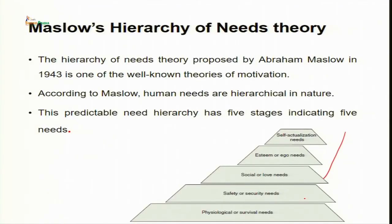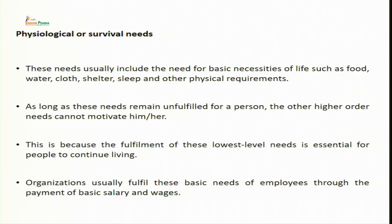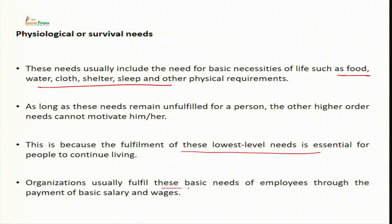Maslow's hierarchy of needs theory was given by Abraham Maslow in 1943. The five needs are: physiological needs, safety needs, social needs, self-esteem needs, and self-actualization need. Physiological needs — food, clothing, shelter — are the lowest level needs, usually fulfilled through payment of basic salary and wages. Safety and security need includes physical safety, freedom from bodily injuries and emotional harms, as well as job security.